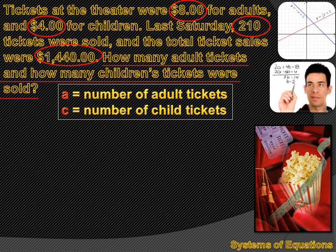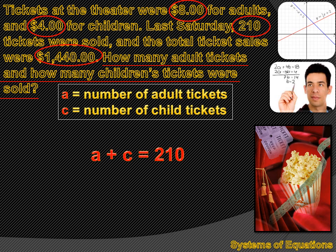I can see there are a couple of totals towards the end of the paragraph. It says last Saturday, 210 tickets were sold — a total of 210 tickets, either adult or children's tickets. So the number of adult tickets plus the number of children's tickets equals 210: A plus C equals 210. And I see another total — $1,440, the total receipts. That's 8 times the number of adult tickets plus 4 times the number of children's tickets equals 1,440. Now I have a system of equations.